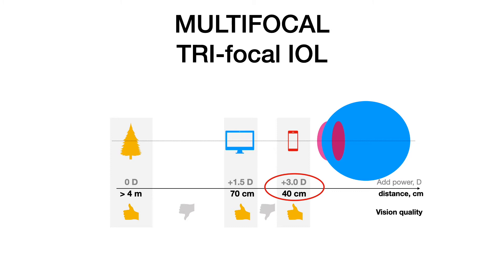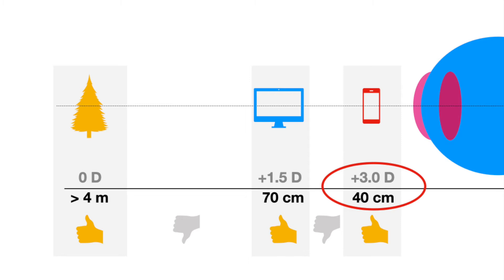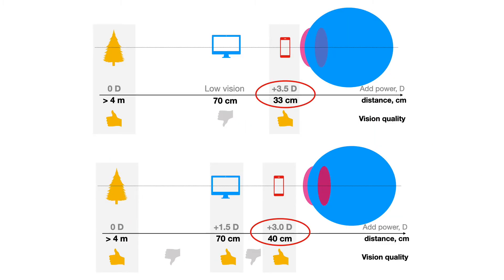A trifocal-multifocal IOL has additional focal points for intermediate use, giving you a sharp image at far, sharp image for working on a computer at intermediate distance, and sharp image for close-up reading. However, depending on the particular IOL model, the distances for near and intermediate vision may vary. For example, with one trifocal model the best intermediate vision could be at 60 cm, while with another it could be at 80 cm. Please ask your doctor for more details about the particular lens you are going to have implanted.